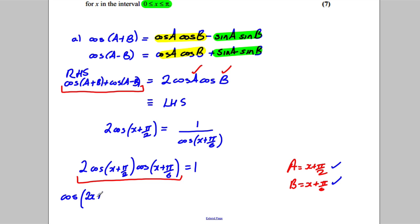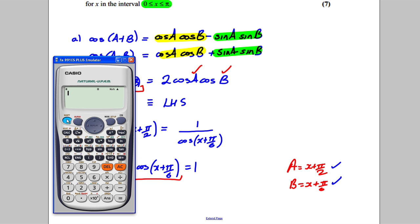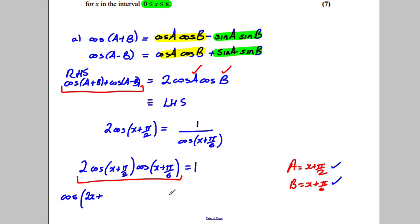get 2x plus pi by 2 plus pi by 6, and you can use your calculator just to do fractions. Simply pi by 2 and pi by 6, you get 2 pi by 3. So 2 pi by 3.